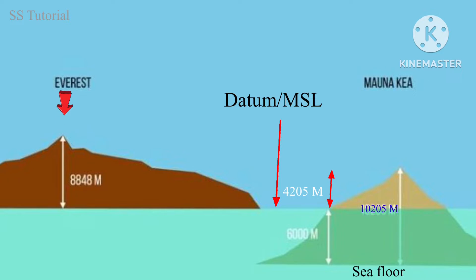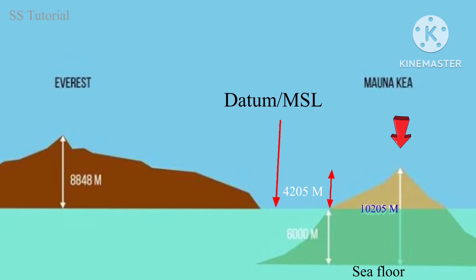On the left side you can see Everest is elevated 8848 meters from the mean sea level. On the right side, Mauna Kea is elevated only 4205 meters above the mean sea level, and the remaining 6000 meters stretch below the mean sea level to the sea floor. That's why when we measure the elevation of Mauna Kea, we consider only 4205 meters, which is above the mean sea level, whereas for Everest we consider 8848 meters as it is totally above the mean sea level.